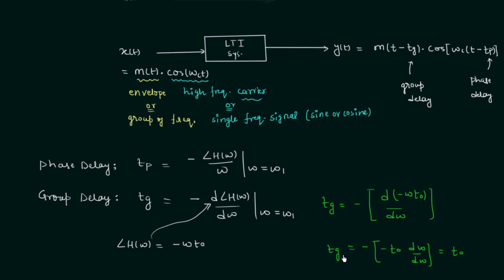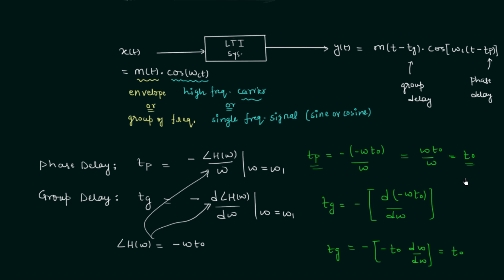So the group delay equals T0 in case of distortionless LTI systems. Similarly, the phase delay Tp = minus(minus ωT0) / ω = T0. Therefore the phase delay equals T0 and the group delay also equals T0, confirming that in case of distortionless LTI systems the phase delay and group delay are the same.